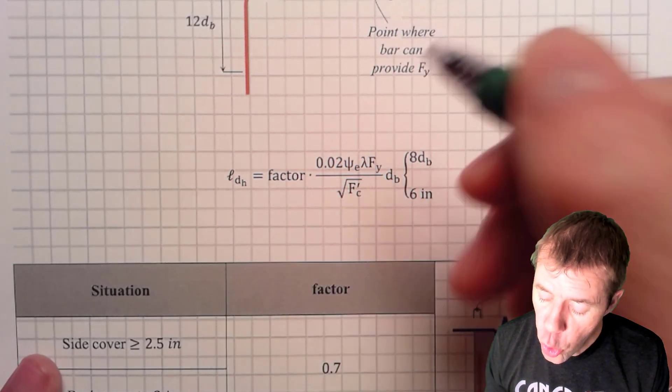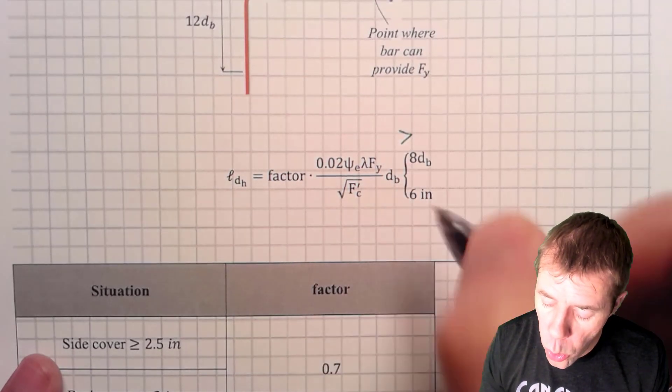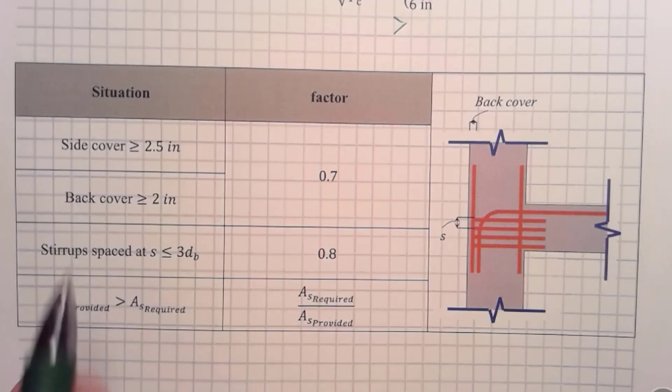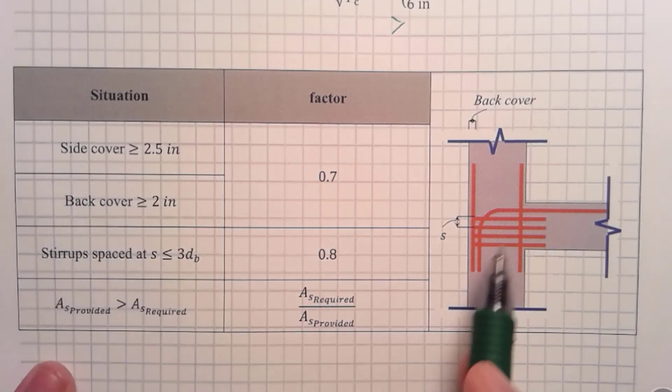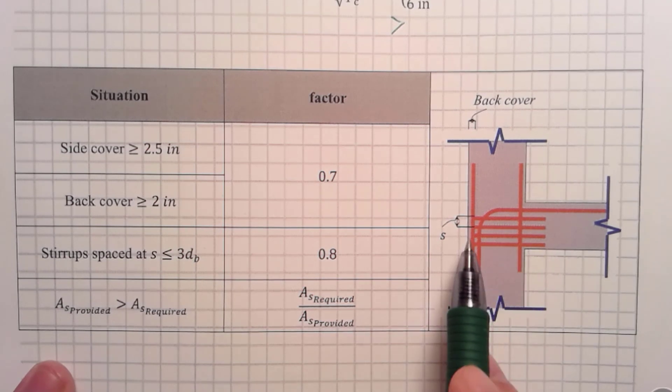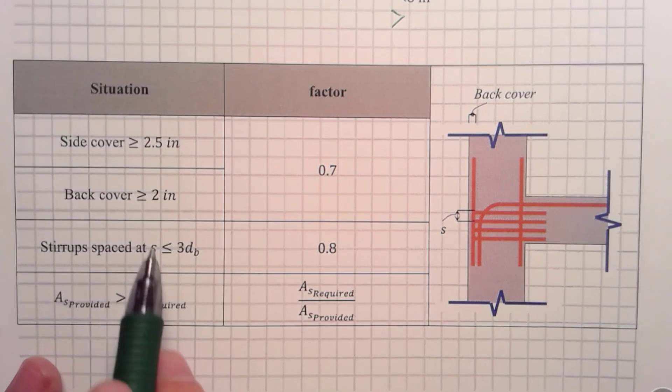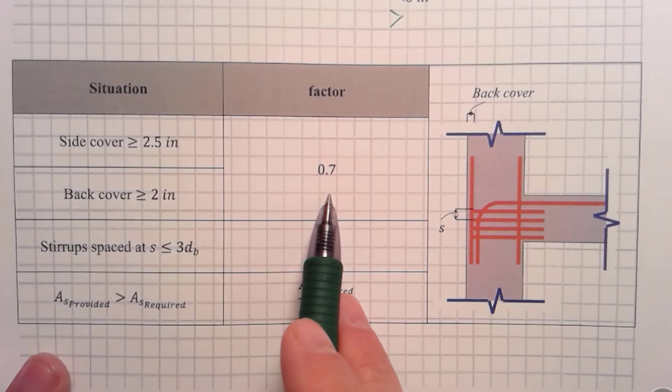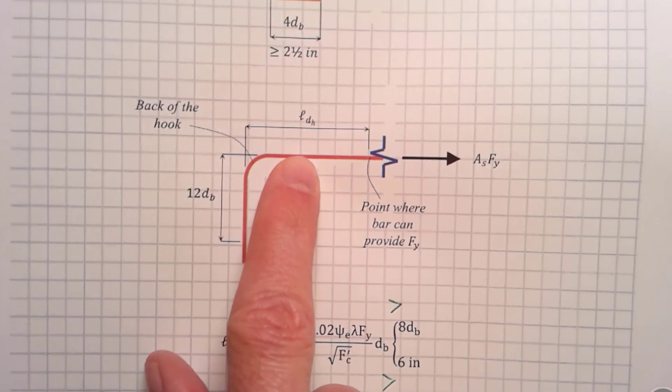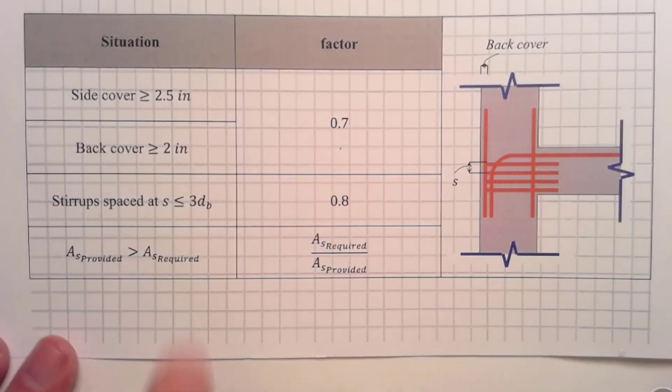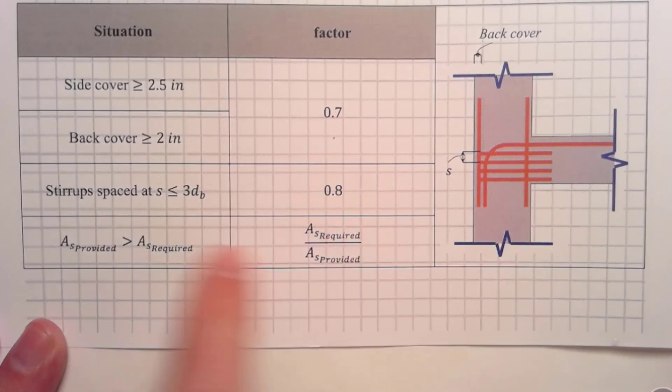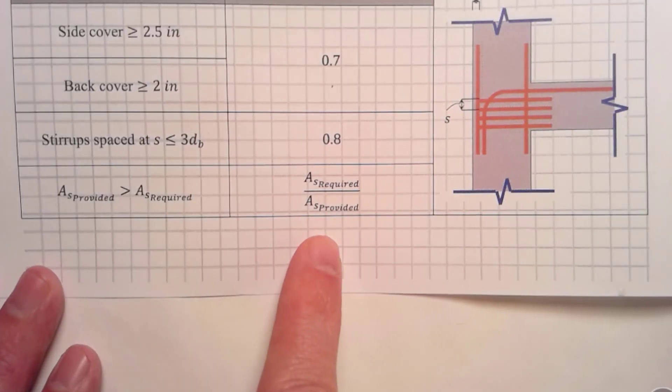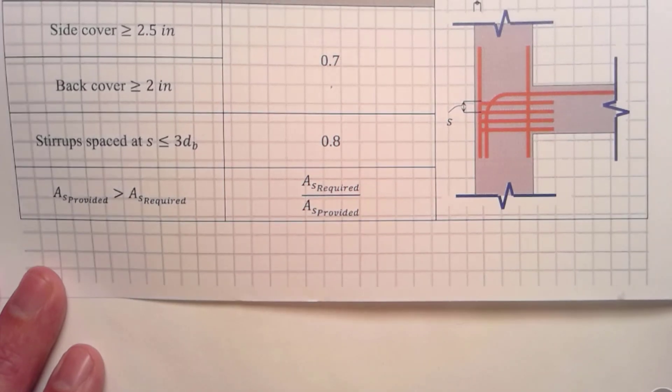Let's talk about these factors in front. They're not that hard in this situation. If I have side cover, I can't really see that in this picture. That would come in and out of the page. If I have a large enough side cover greater than two and a half inches, or if I have a large enough back cover greater than two inches, then I can decrease my hook length by 0.7. My hook length, yeah, that's that LDH, that straight thing. That is this equation. I can use a 0.7 there. If my stirrup spacing there around the bar, if my stirrups are spaced less than three bar diameters, then I can use a 0.8. And then again, I can use that same AS required over AS provided, and I can reduce it by that ratio.